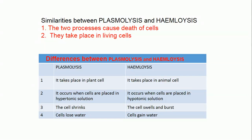Similarity between plasmolysis and hemolysis: one, both processes cause death of cells; two, they both take place in living cells. Differences between plasmolysis and hemolysis: one, plasmolysis takes place in plant cells, while hemolysis takes place in animal cells. Two, plasmolysis occurs when cells are placed in a hypertonic solution, while hemolysis occurs when cells are placed in a hypotonic solution. Three, under plasmolysis the cell shrinks, while under hemolysis the cell swells and bursts. Four, under plasmolysis the cell loses water, while under hemolysis the cell gains water.